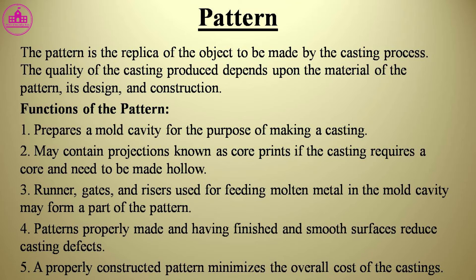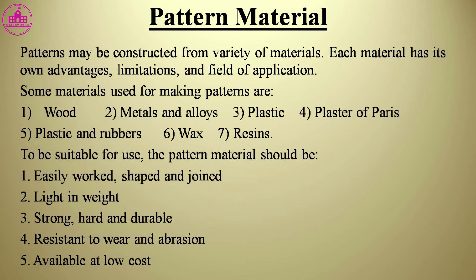A properly constructed pattern minimizes the overall cost of the castings. Patterns may be constructed from a variety of materials, each with its own advantages, limitations, and applications. Some materials used for making patterns are: wood, metals and alloys, plastic, plaster of Paris, plastics and rubbers, wax, and resins. To be suitable for use, the pattern material should be easily worked, shaped and joined; light in weight; strong, hard and durable; resistant to wear and abrasion; and available at low cost.